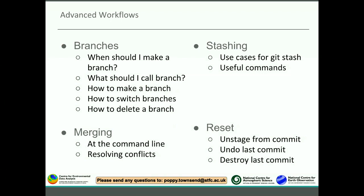Here's a summary of the things we'll be looking at in the next section: branches, stashing, merging, and git reset. With branches you should know when to make a branch, what to call it, how to make it, how to change between branches, and delete them once you've finished. Stashing is a niche but very useful feature. Git merging is integral to the branching workflow. We'll cover two major approaches and discuss git reset in the context of unstaging, undoing your last commit, or even destroying a commit.